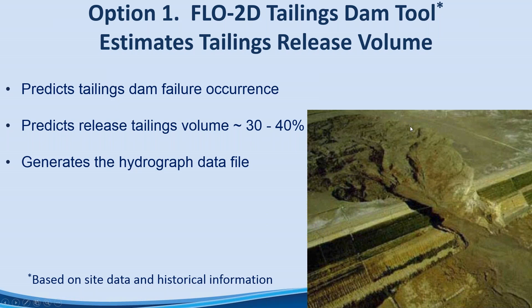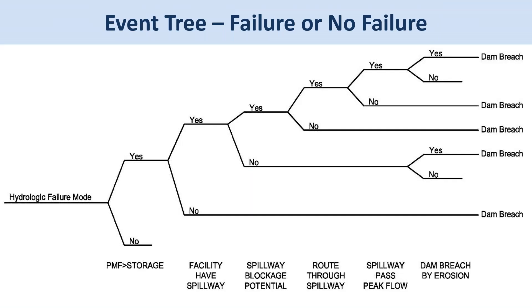As shown in the image, a tailings dam failure will typically not encompass the entire tailings dam — usually less than half of the volume in the tailings dam will be routed through the breach. This tool has three failure modes: hydrologic, static, and seismic. It goes through an event tree process where you add data to a dialog box, and it will predict whether you're going to have failure or no failure.